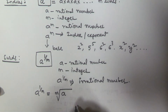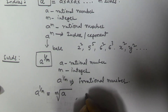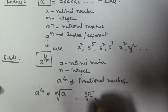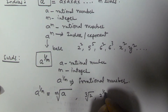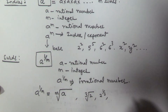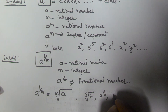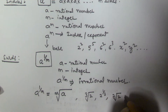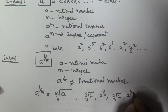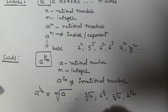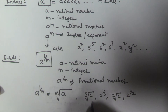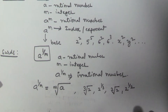Some examples of surds are: three root two, which can also be written as two to the power of one by three. Or two root two, which is equivalent to two to the power of one by two. These are all examples of surds.